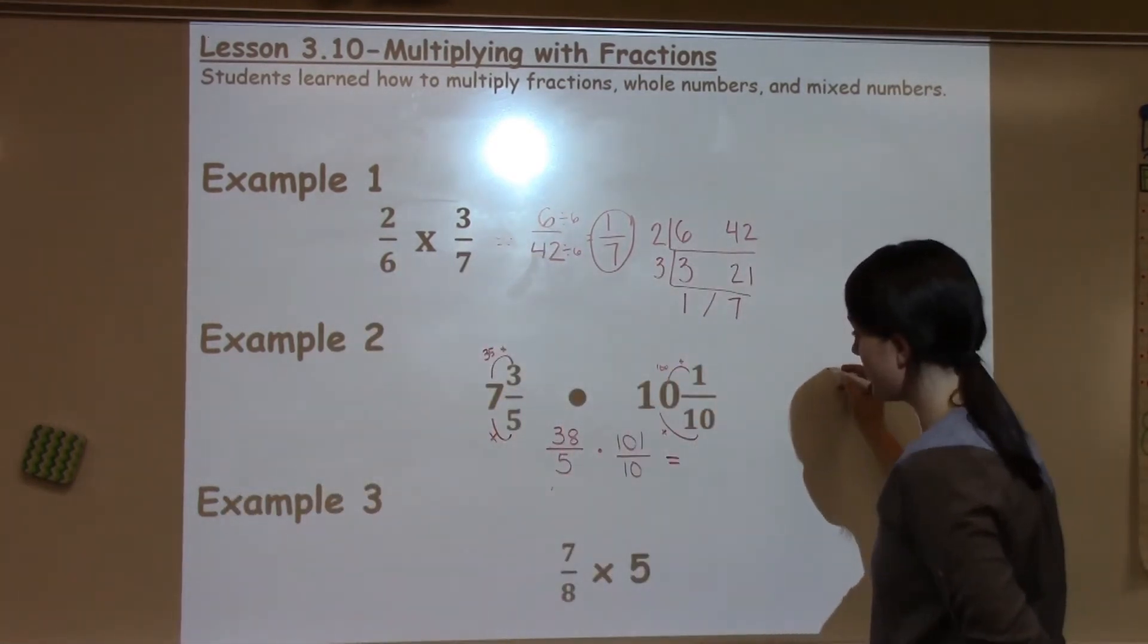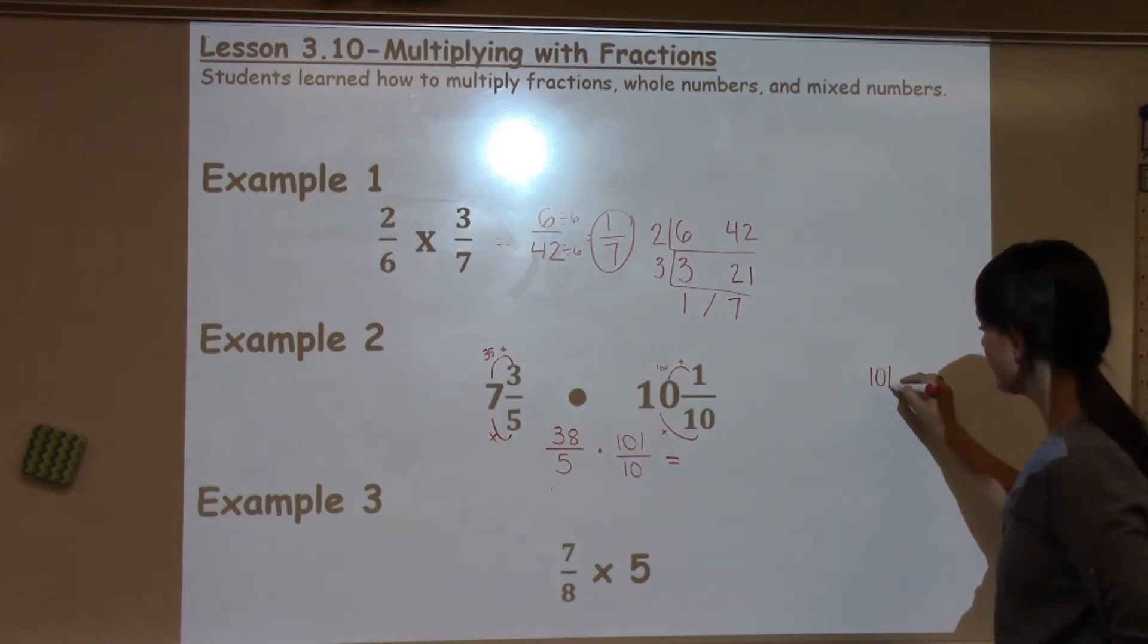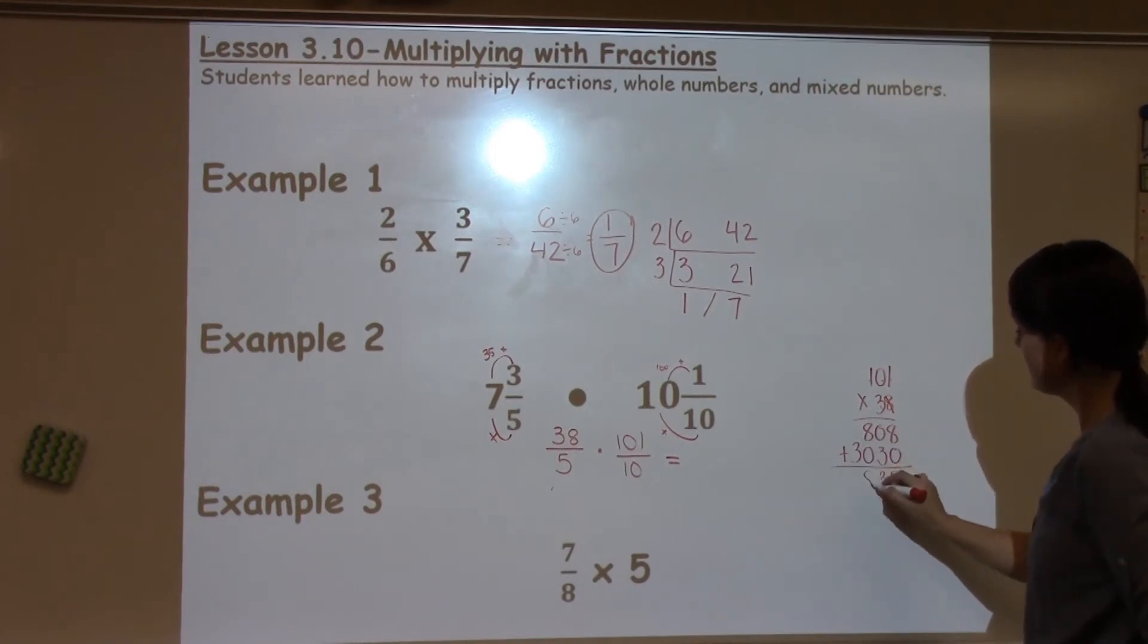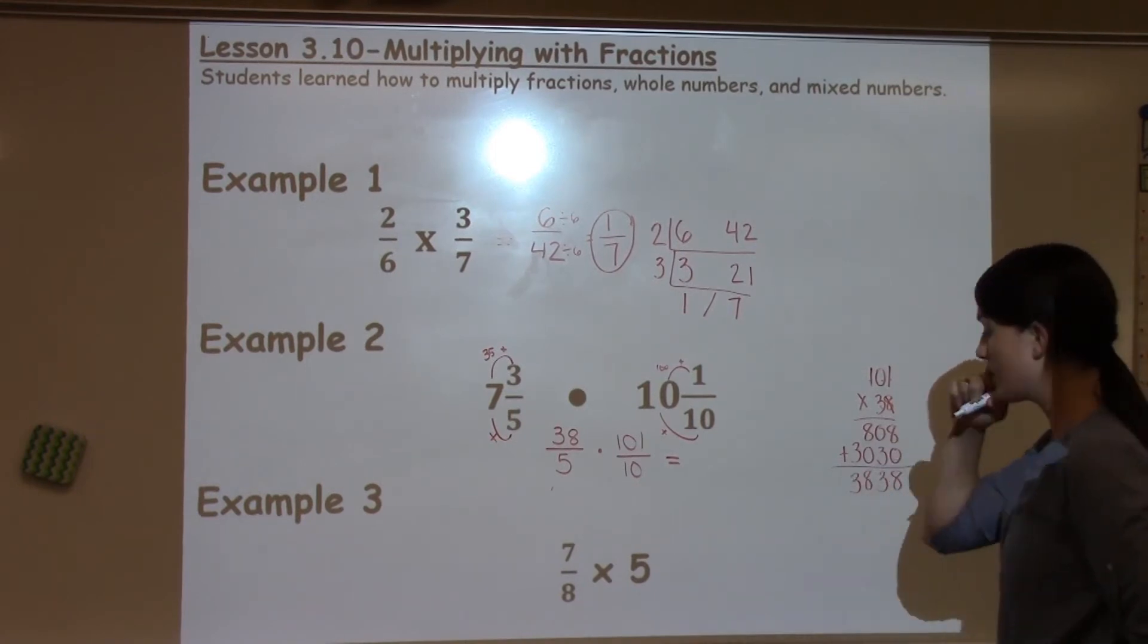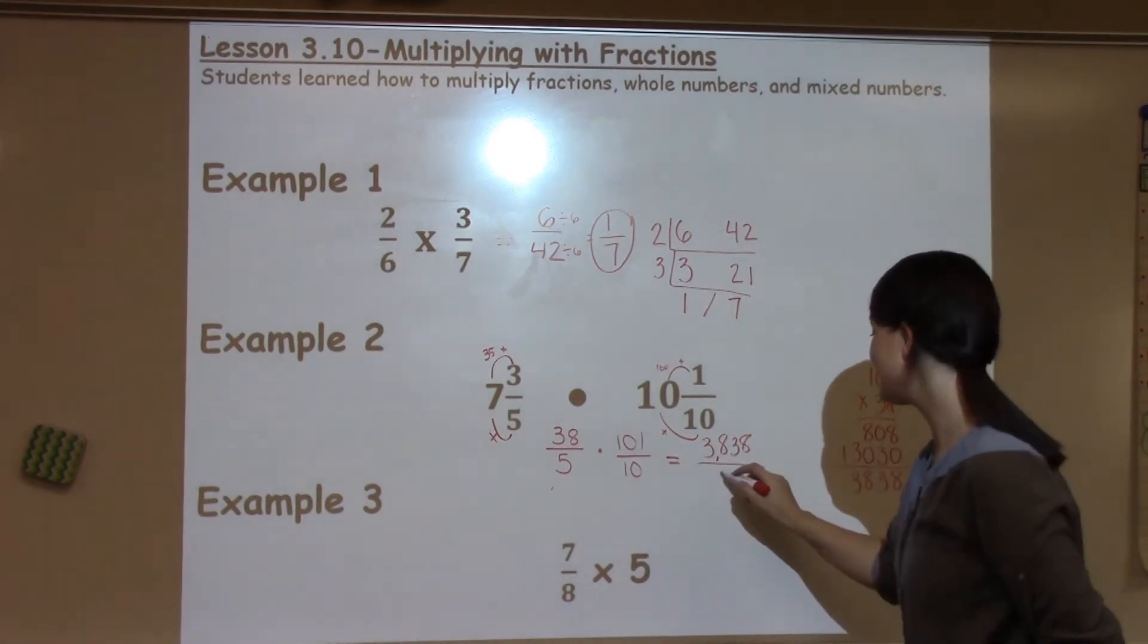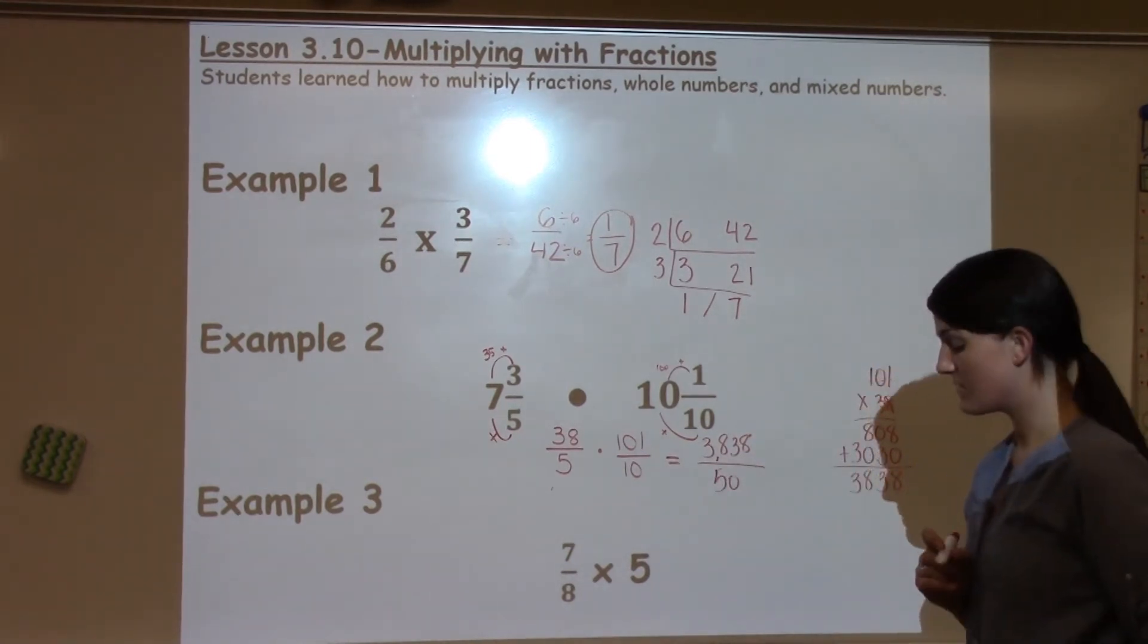So this is pretty big numbers here. I'm going to pull it off to the side. 101 times 38. 8 times 1 is 8, 8 times 0 is 0, 8 times 1 is 8 again. 3 times 1 is 3, 3 times 0 is 0, 3 times 1 is 3. I'm going to add for a big old numerator of 3,838. 5 times 10, that's nice, easy, basic math, so it gives me 50.